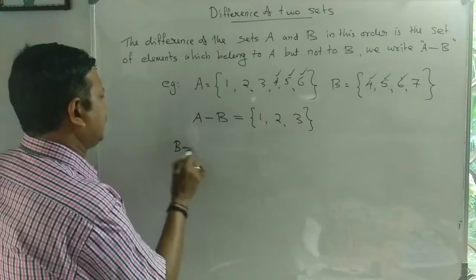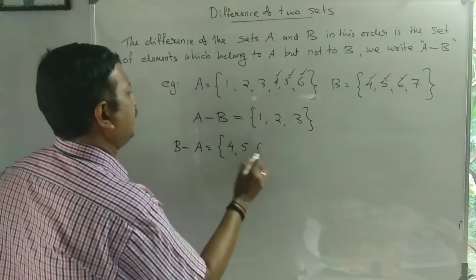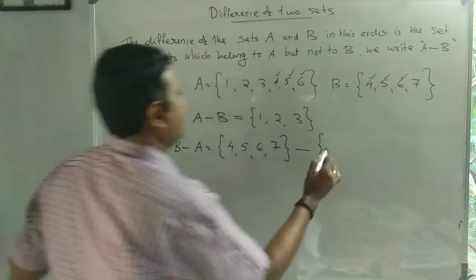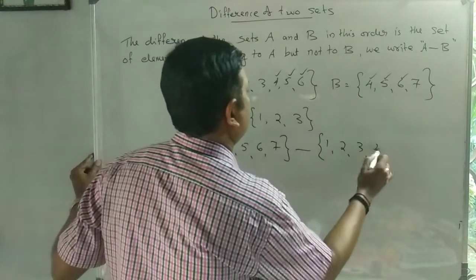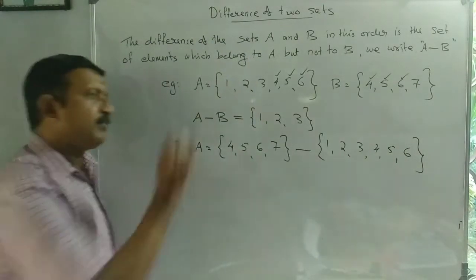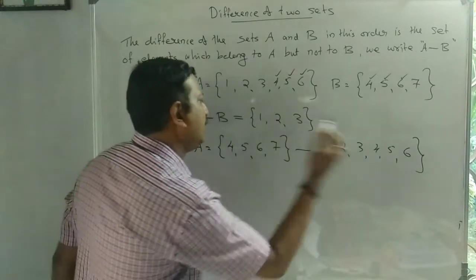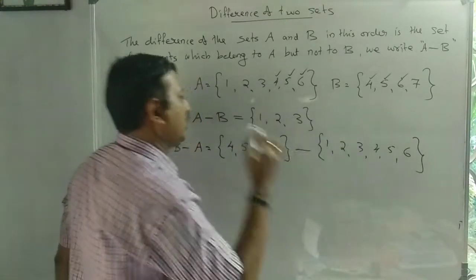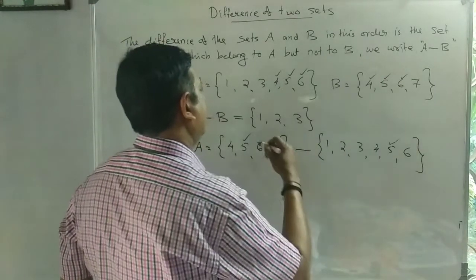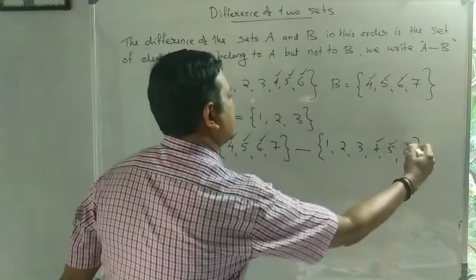If we are going to compute B minus A: B minus A is B = {4, 5, 6, 7} minus A = {1, 2, 3, 4, 5, 6}. We are going to get B. B is going to be a little more than A: 4, 5, 6 — that is the same way.